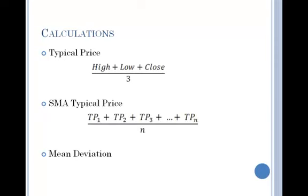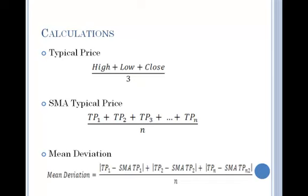First, calculate the last period's typical price, which is the average of high, low, and close. Second, calculate the 20-day simple moving average of the typical price. Lambert recommended the 20-day period as the common default value, but the value may vary to suit individual preferences and choice of securities.